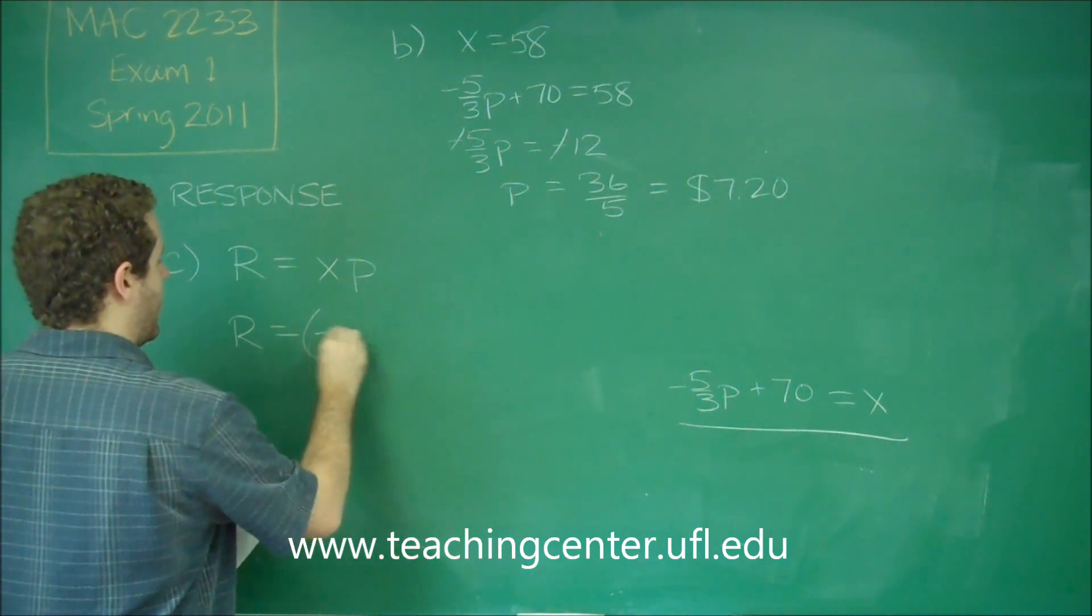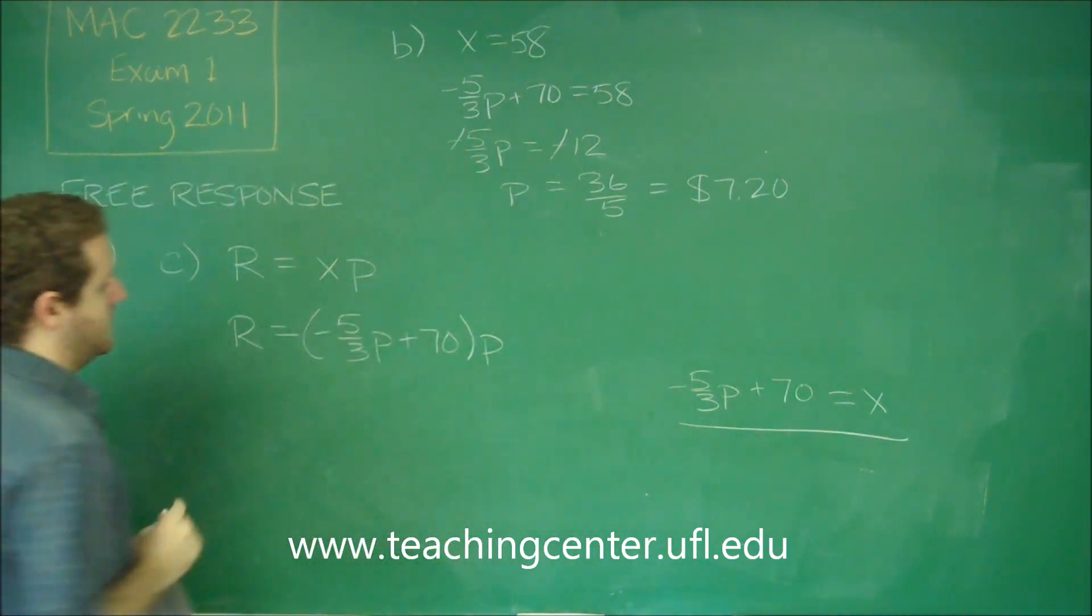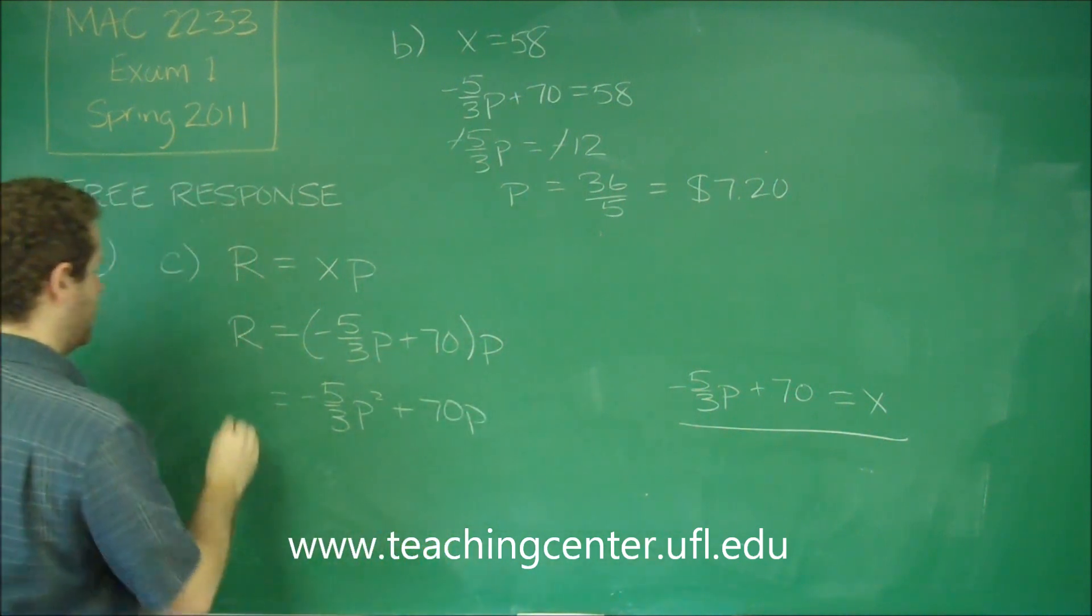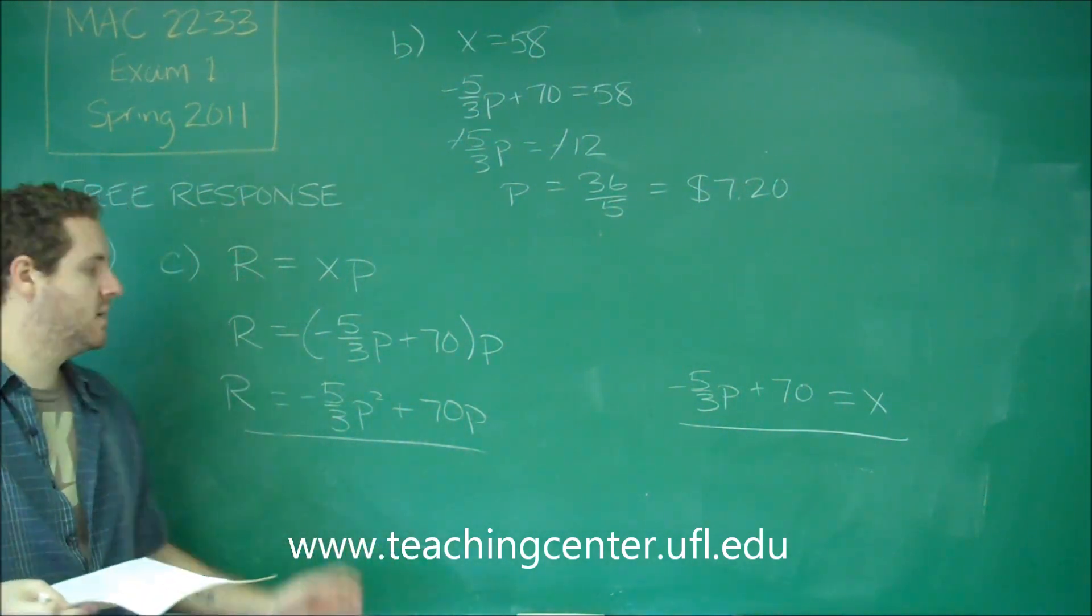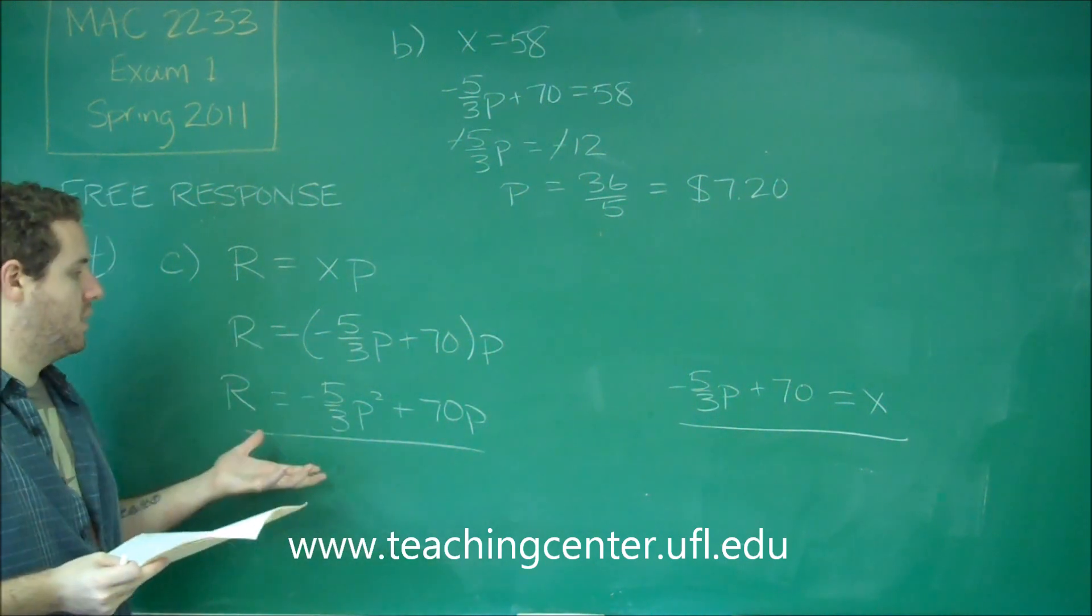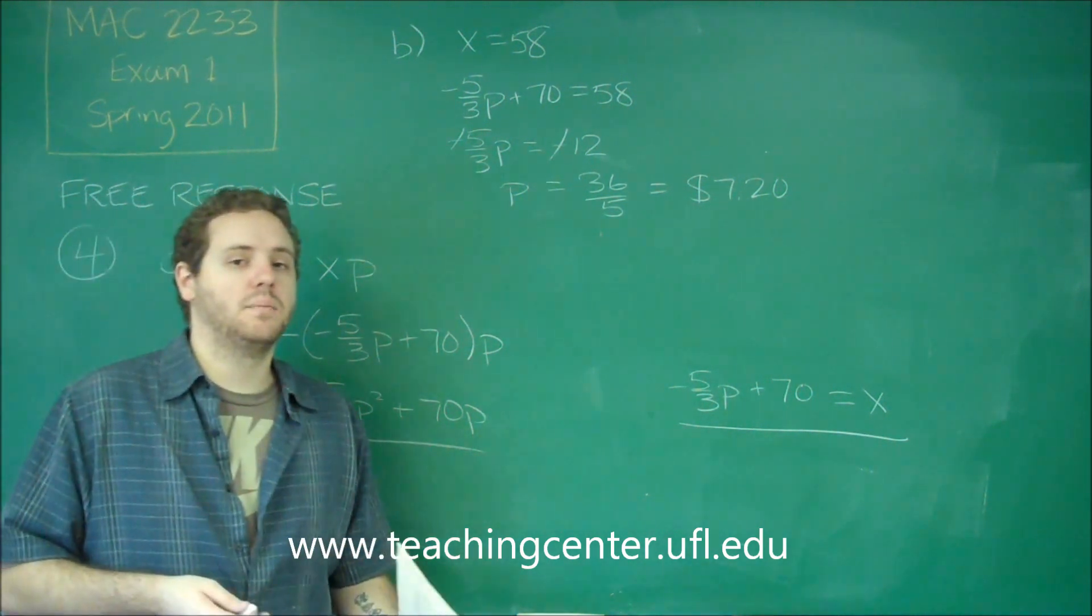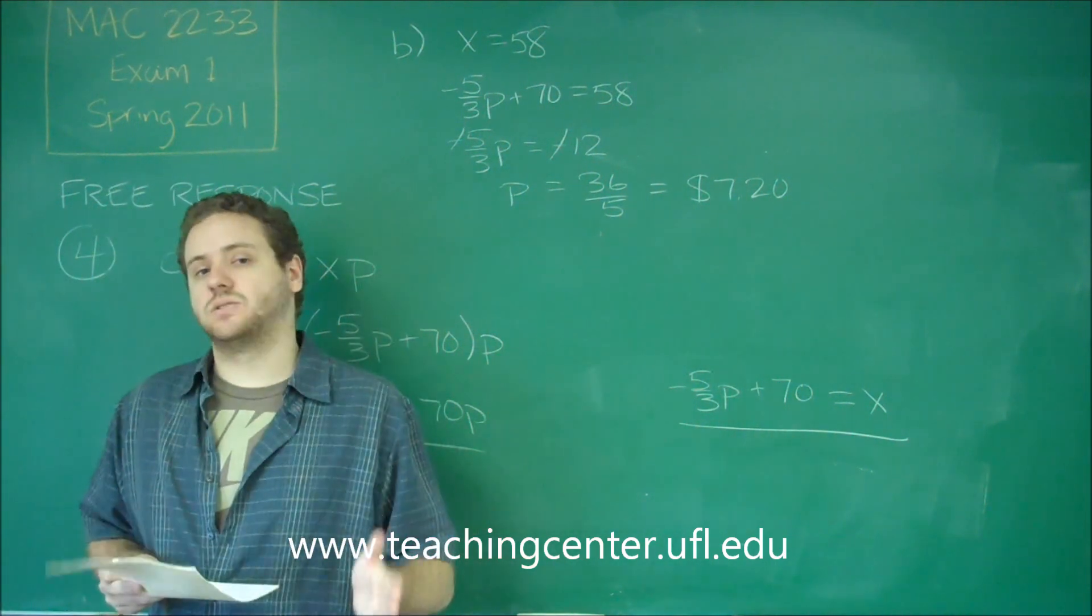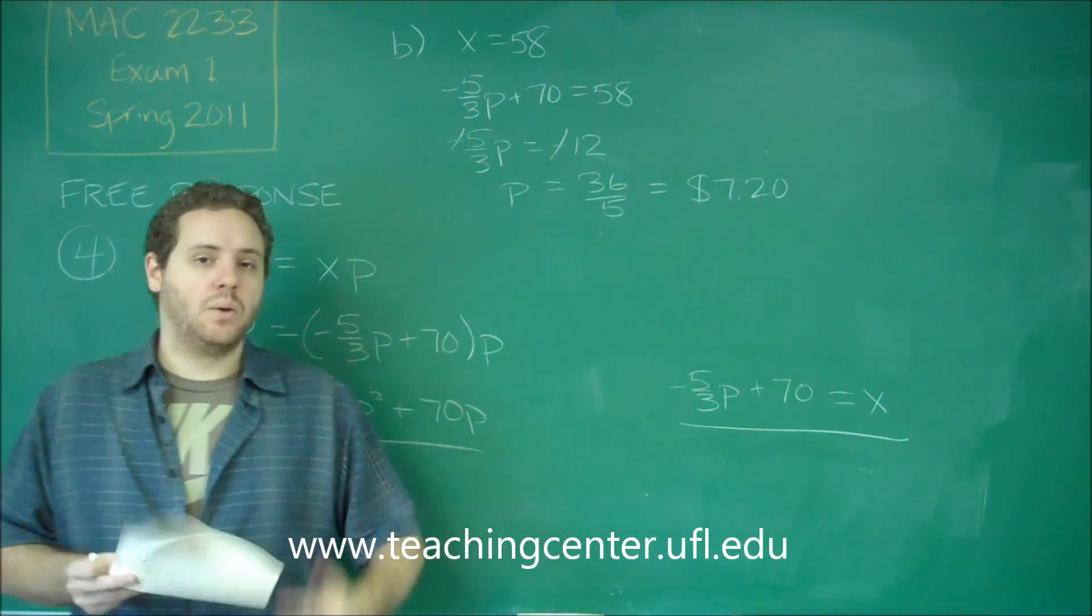Let's do that now. Instead of X, we're going to write negative 5 thirds P plus 70 times P. And if we distribute that, we get negative 5 thirds P squared plus 70 P. This equation right here gives the total revenue that the store would make if you put a selling price on the t-shirt. So, if you knew this week you were going to sell t-shirts for $6, if you plug that in, this would give you how much money you would make that entire week. Just be careful on these problems whether they're talking about X or P and in which way you need to write your answer. Remember that when you're writing them as coordinate points though, you always want X, the X coordinate to be the number of units. You always want the Y coordinate to be the price. If you need to write something differently like in this problem, it will tell you explicitly.